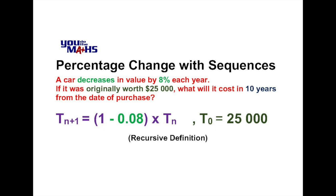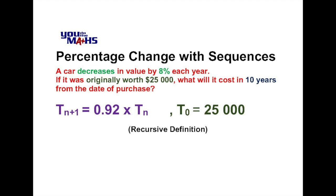Because we've written 1 minus 0.08 multiplied by t(n), we can simplify 1 minus 0.08 as 0.92. The way to think about that is: if there's been an 8% drop in value, effectively 92% remains. So 8% is gone and 92% is still there. In sequence notation, the next term is 92% of what was originally there — in this case t(n).